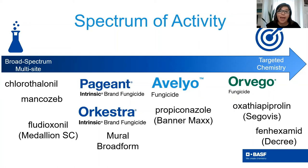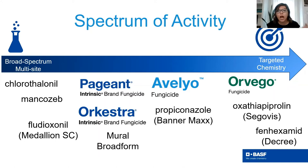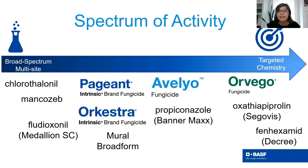Older standbys like thiophanate-methyl or fludioxonil are nice utility options that can be tank-mixed and added to programs when you need extra protection. At the right side of the spectrum are specialist products like Orvego, Segovis, and Subdue Max — all Oomycete-specific products controlling diseases caused by Phytophthora and downy mildew pathogens. Decree has activity on Botrytis and pretty much nothing else. Specialists have a very narrow disease spectrum, so it's important to rotate them with broad-spectrum products to ensure protection against anything that may pop up.